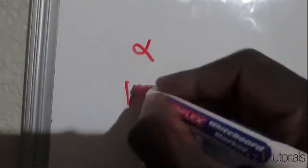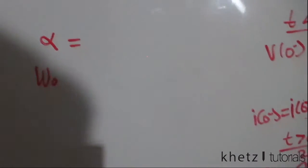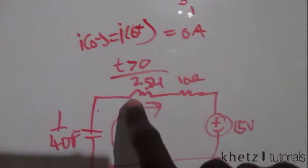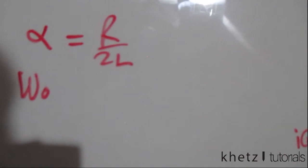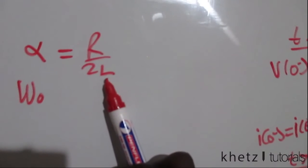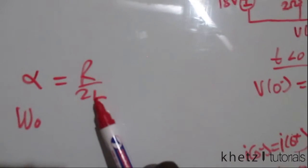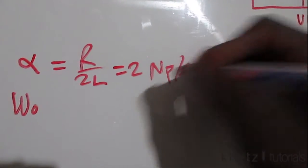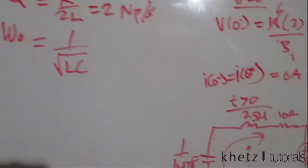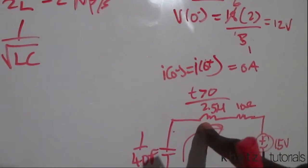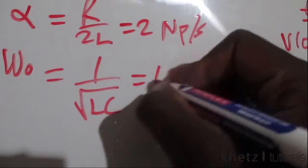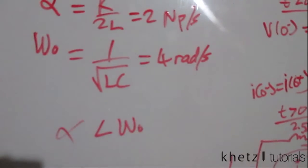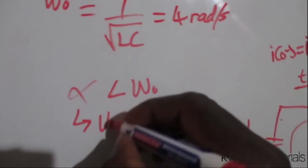Now let's find the type of response expected from this circuit by computing the damping factor and resonant frequency. For a series RLC, the damping factor α = R / 2L. Substituting R = 10 and L = 2.5, we get α = 10 / (2 × 2.5) = 2 Nepers per second. The natural frequency ω₀ = 1 / √(LC), and with L = 2.5 and C = 1/40, we get ω₀ = 4 radians per second. Since α = 2 is less than ω₀ = 4, we expect an underdamped response.